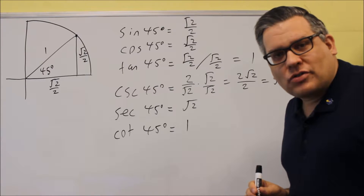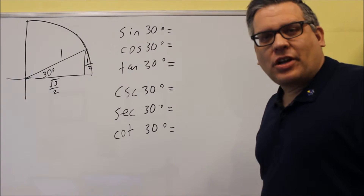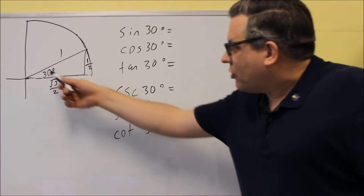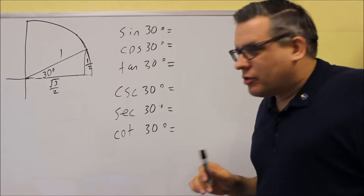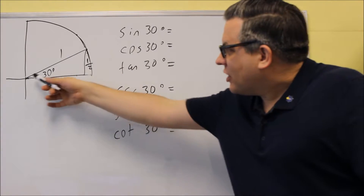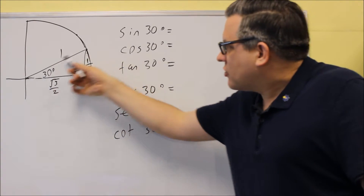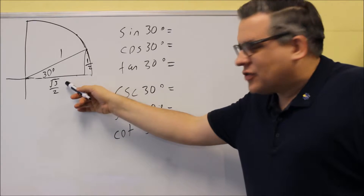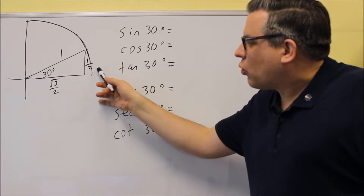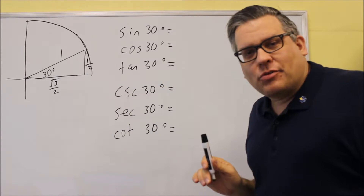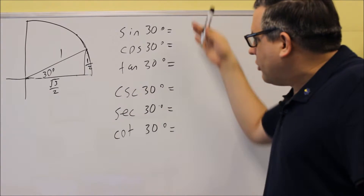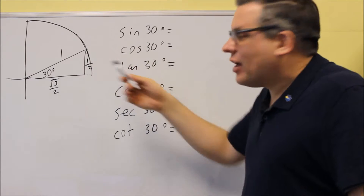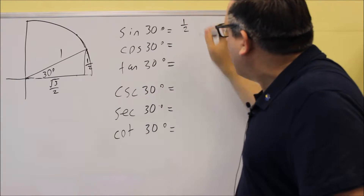Now let's take a look at 30 degrees, another special angle. When you have a 30 degree triangle drawn, the hypotenuse is still 1 because we're on the unit circle. The x value is square root of 3 over 2, and the y value is 1 half. So sine 30 degrees is the y value at 30 degrees, which equals 1 half.